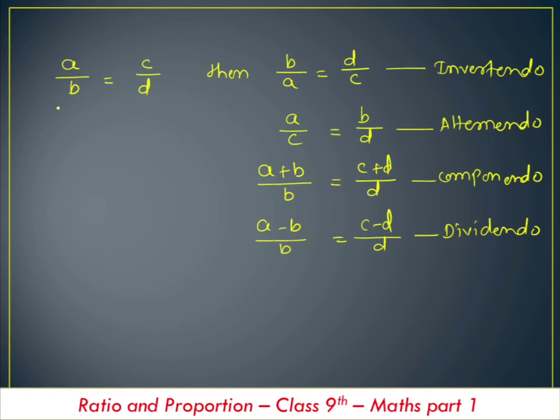If a divided by b is equal to c divided by d, and if a minus b divided by b is equal to c minus d divided by d, then this property is called dividendo.